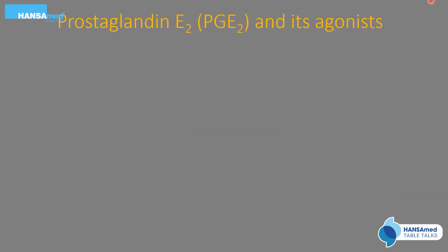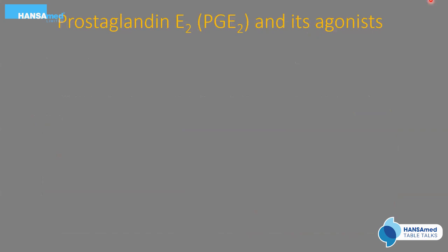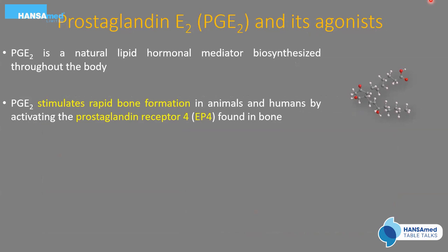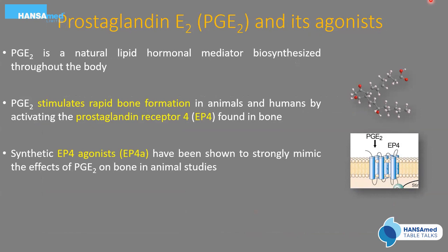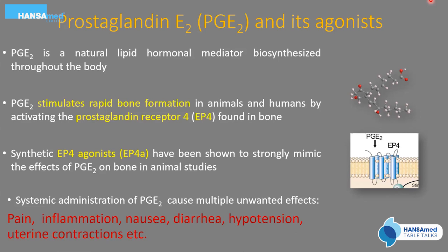Prostaglandin E2 is a natural lipid hormonal mediator synthesized throughout the body. It stimulates rapid bone formation in animals by activating the prostaglandin receptor 4, known as EP4, found on osteoblasts in bone. Synthetic EP4 agonists have been shown to strongly mimic the effects of PGE2 on bone in animal studies. However, the biggest problem with systemic administration of PGE2 is side effects such as pain, inflammation, nausea, diarrhea, hypotension, and uterine contractions, which limits its clinical use.